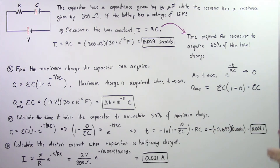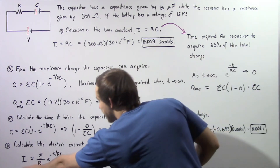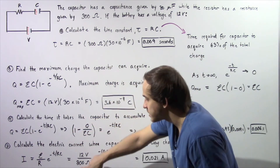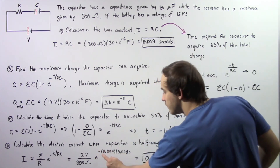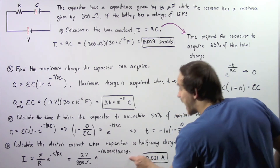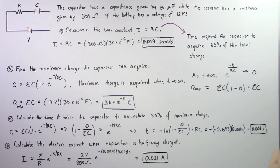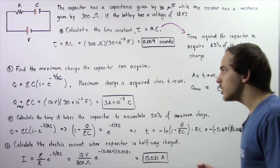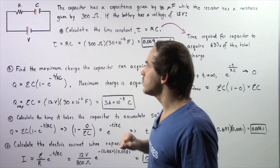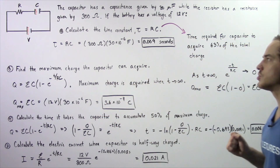From part C, we know it takes 0.006 seconds to accumulate half the maximum charge. So I equals 12 volts divided by 300 ohms, multiplied by e raised to the power of negative 0.006 seconds divided by the time constant of 0.009 seconds, giving approximately 0.021 amps. This is the electric current flowing through the RC circuit when the capacitor has accumulated 50% of the maximum charge.